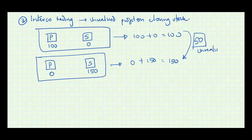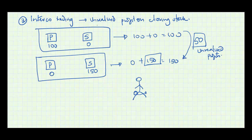We must eliminate the unrealized profit. It is like having a 50 shilling note and moving it from one pocket to another — you cannot claim you now have 100 shillings. The inventories are overstated by 50, so whenever there is intercompany trading involving a sale of inventories at a markup, the inventory figure in the consolidated accounts is: parent plus subsidiary, less the unrealized profit.